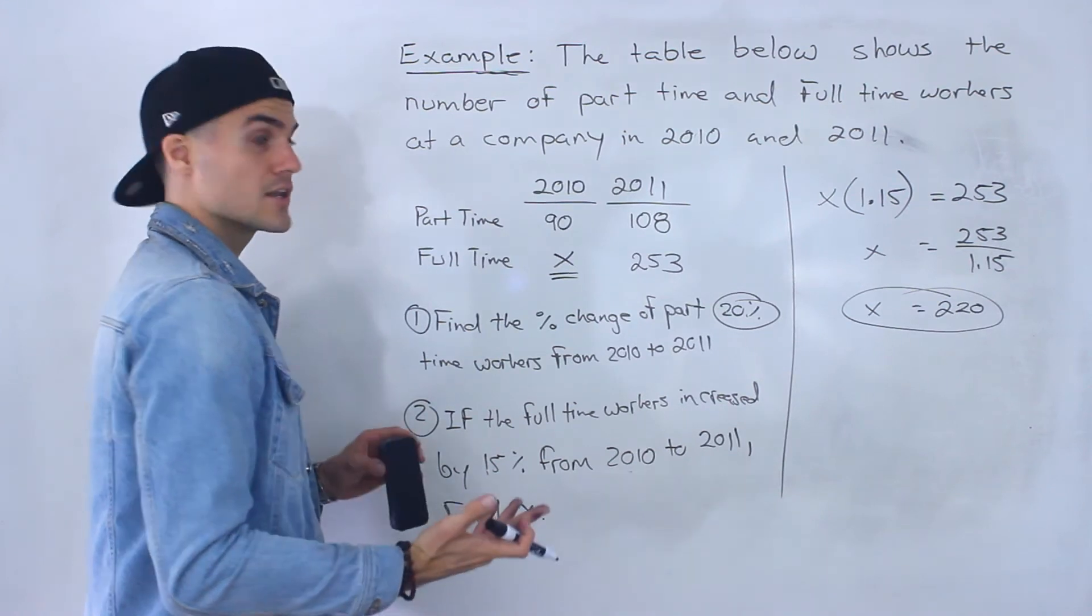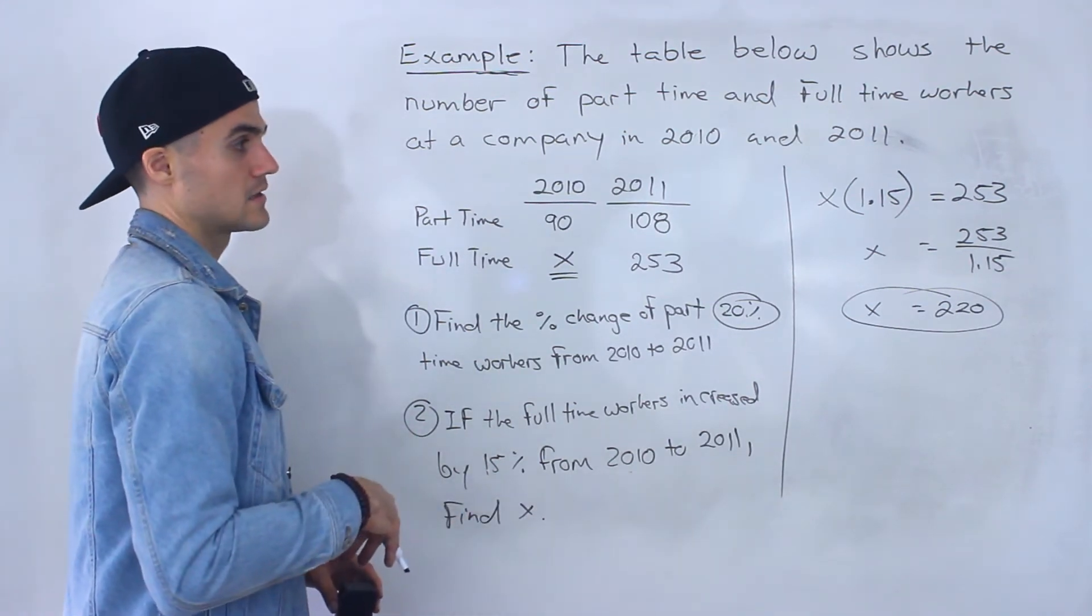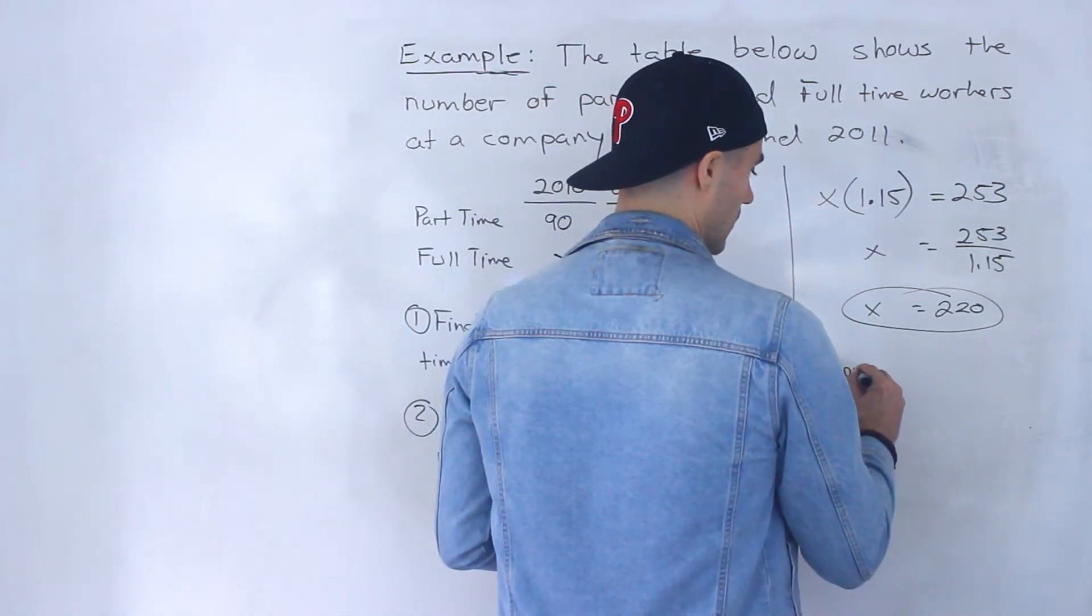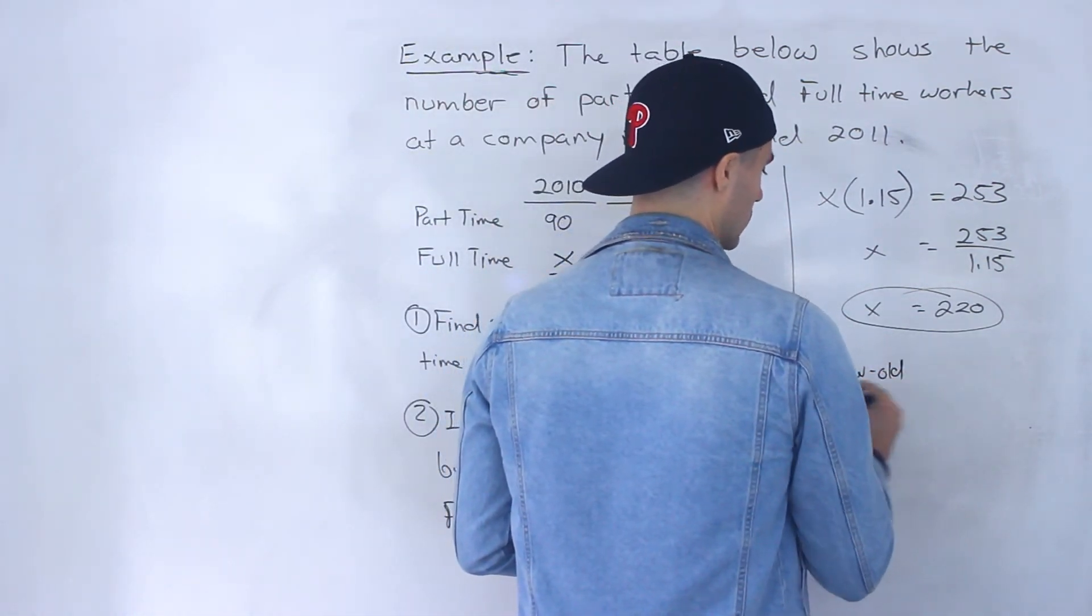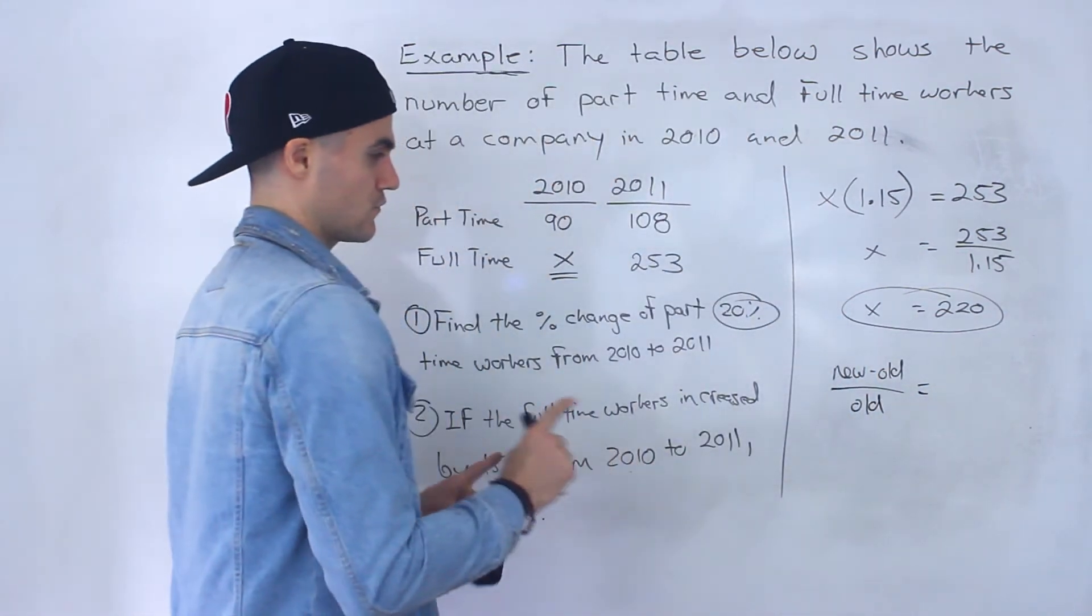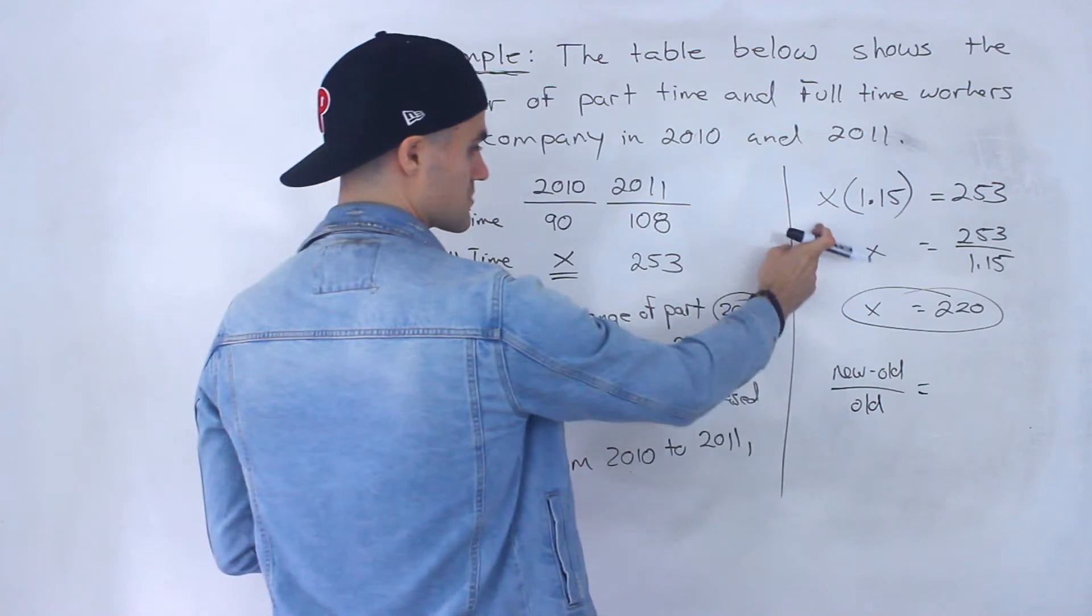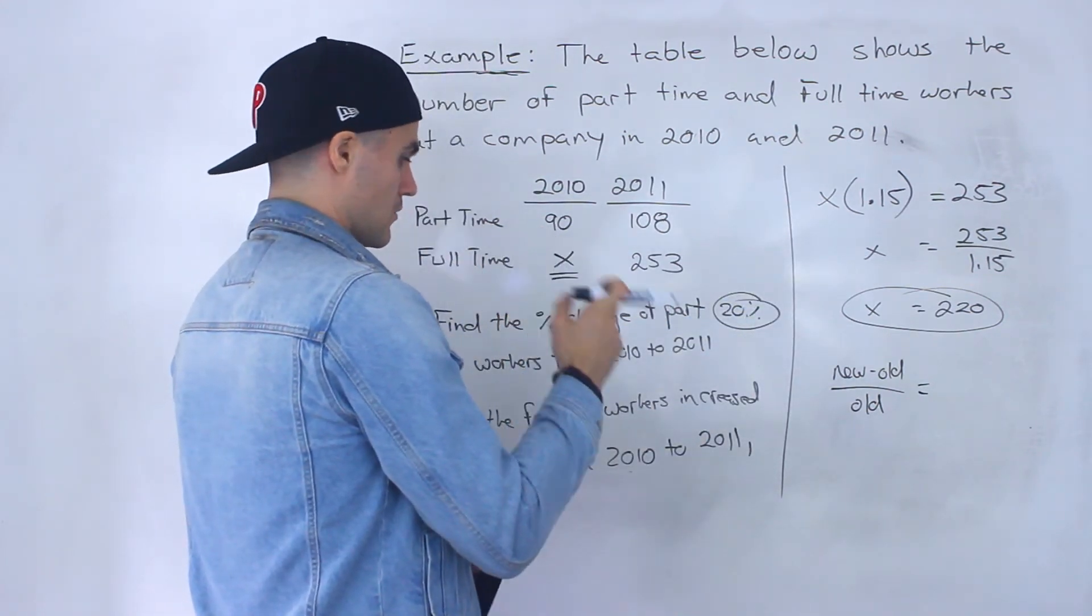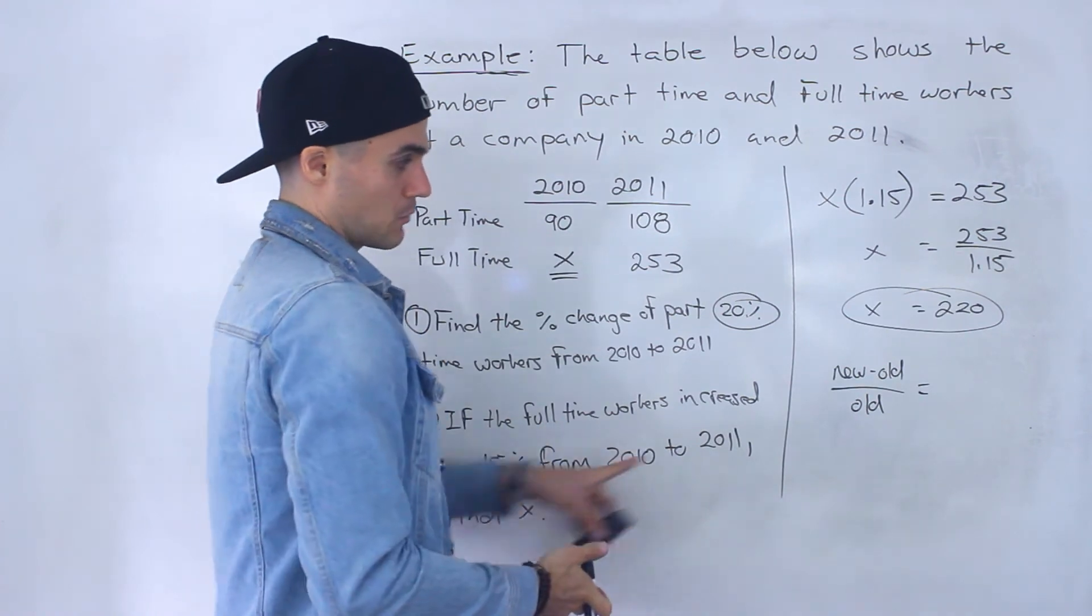Another way you could have done this is you could have used that new minus old over old formula. Actually don't recommend going about it this way for this particular question, I think this is more simple, but if you did it this way, the percentage increase is 15 percent. Now remember this is going to give us a decimal so this would be 0.15.